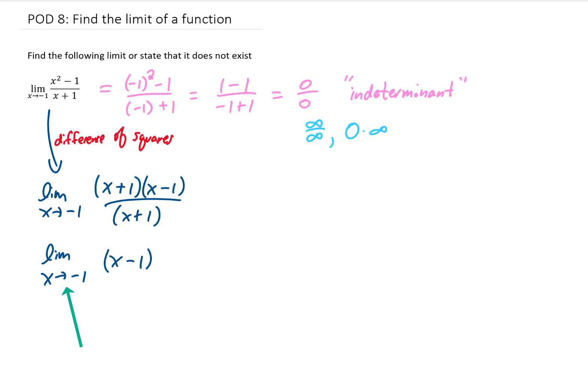And the question is now can we plug in x equals negative 1? We can. We get negative 1 minus 1, which is negative 2, which is not an indeterminate form. So we have our answer.